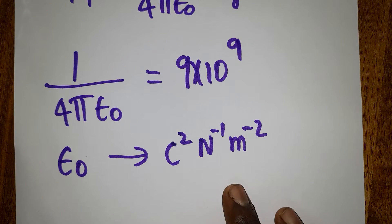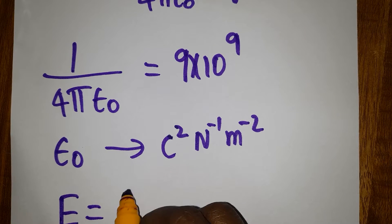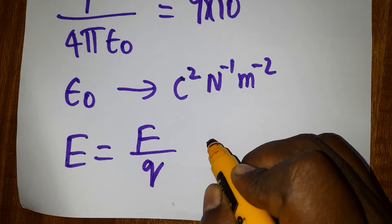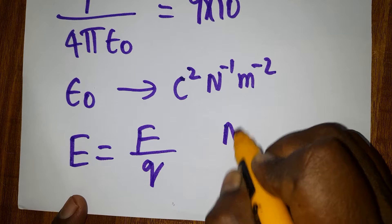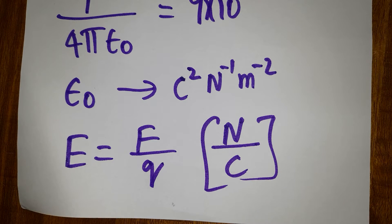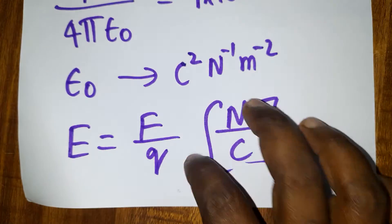The electric field is equal to force per unit charge. The unit is newton per coulomb — force unit is newton, charge unit is coulomb. Force is a vector quantity and electric field is also a vector quantity.